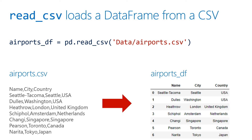Something you might notice is that we did have a row indicating the names of our columns — name, city, country — and read_csv automatically figured out that those were the column headers. So you'll see the columns have headers of name, city, and country. You'll also notice that an index was created automatically, because as Christopher showed you, data frames have an index, and that index was created automatically for the rows from our CSV file.